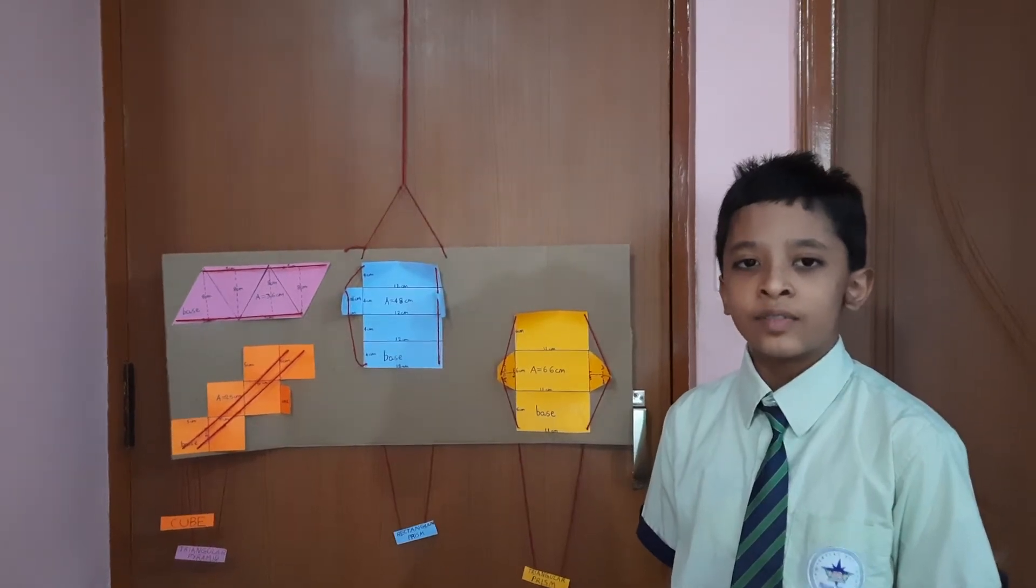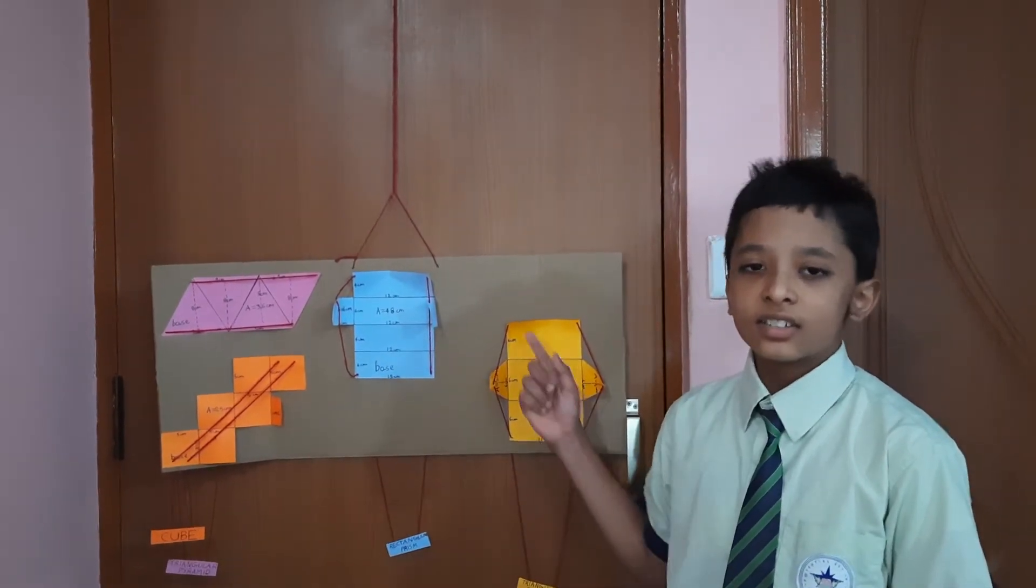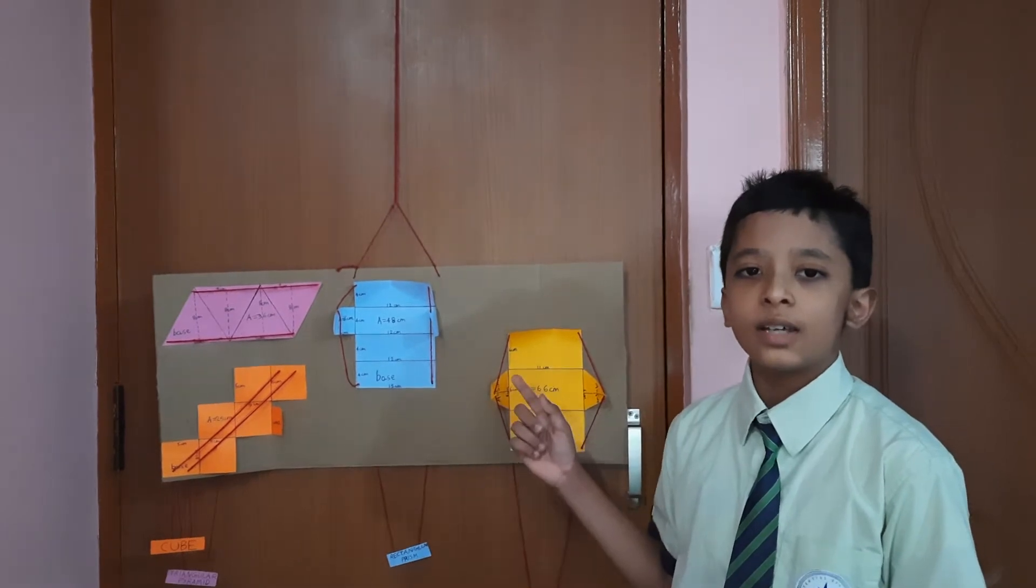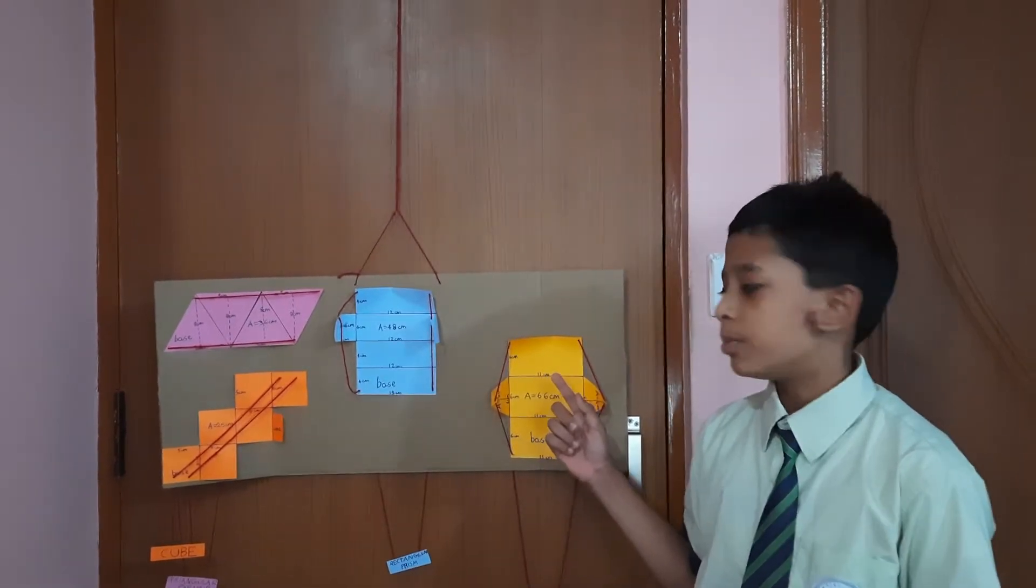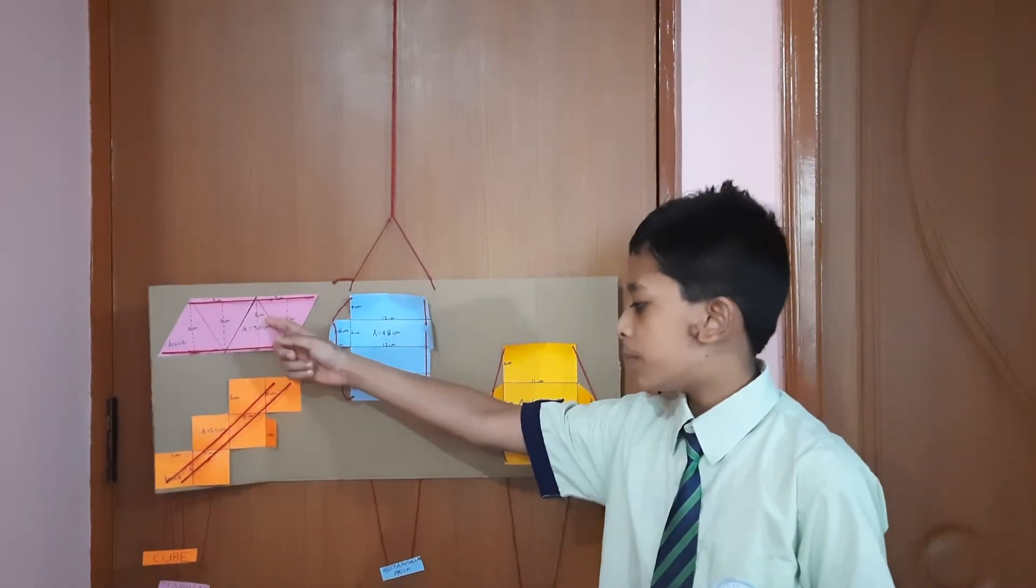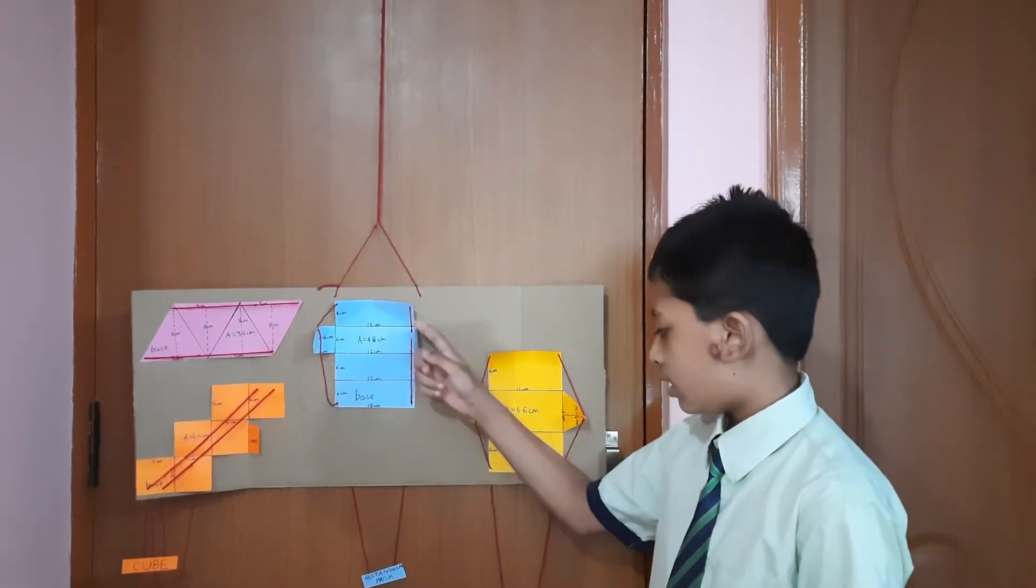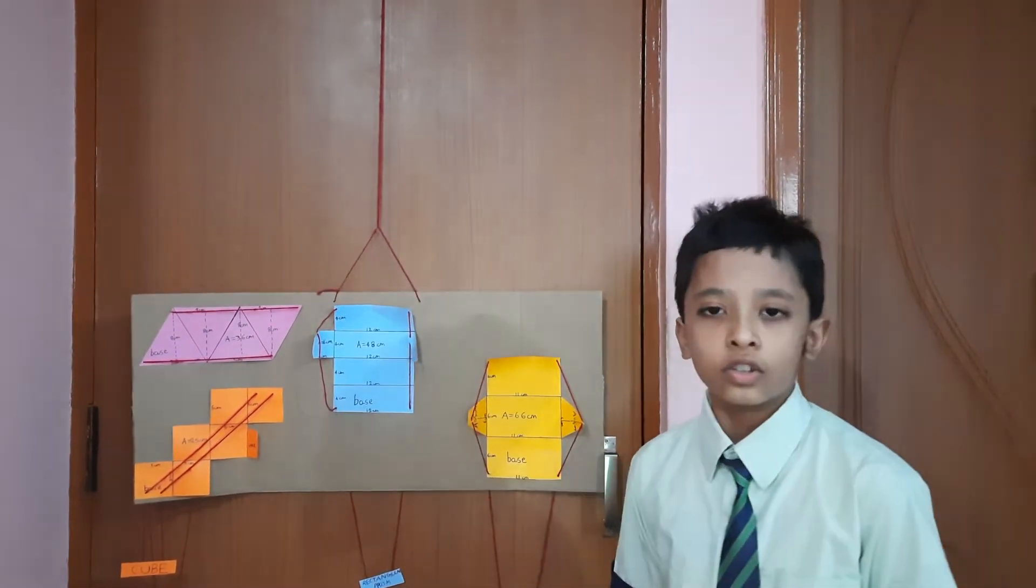Hello everyone, I am Sharon J from 5th grade RKNRN. This is a working model of surface area 3D pop-up net shapes where I have presented a cube, a triangular pyramid, a triangular prism